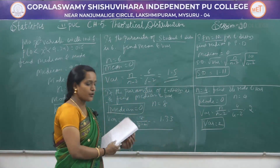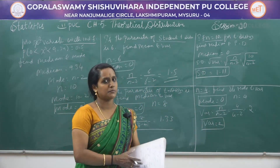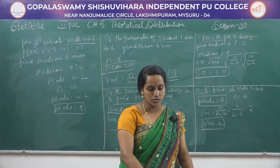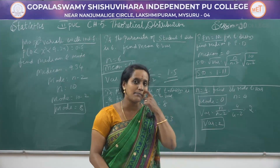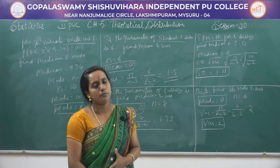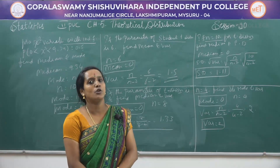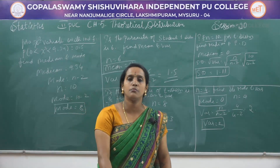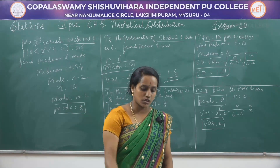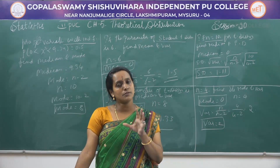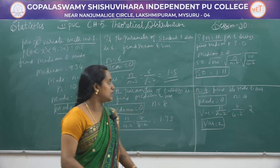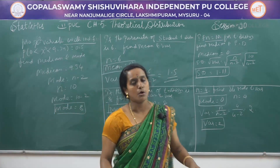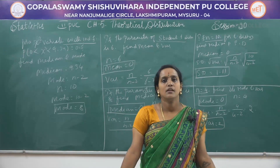These are some important two-marks problems in theoretical distributions — normal, chi-square, and t-distributions. In the exam, you will get this type for 2 marks or 1 mark. Please refer to the features of normal, t, and chi-square distributions where these formulas are listed. This is a very important concept to score good marks. Thank you.